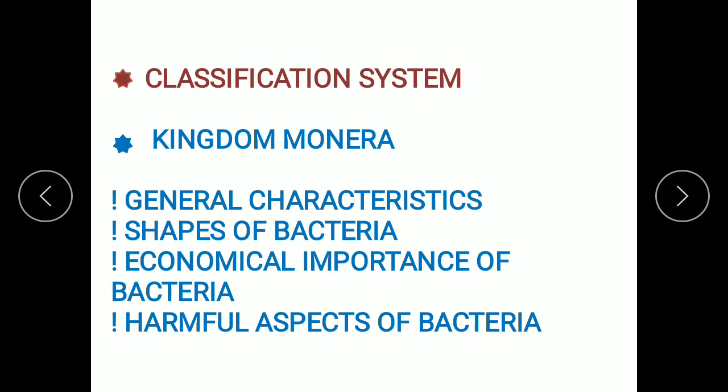In today's lesson, we discussed the classification system, in which we learned that the whole living world is divided into five kingdoms, out of which we discussed Kingdom Monera. For Kingdom Monera, we covered its general characteristics, different shapes of bacteria, economical importance of bacteria, and harmful aspects of bacteria.